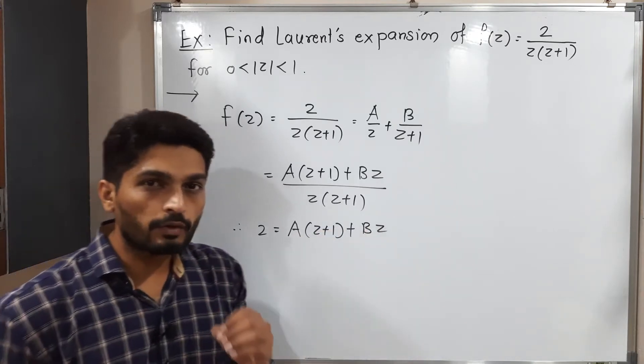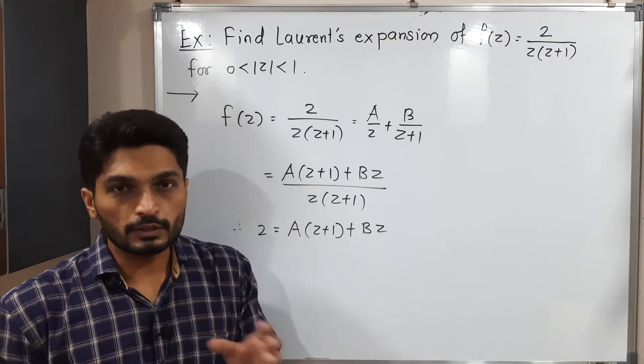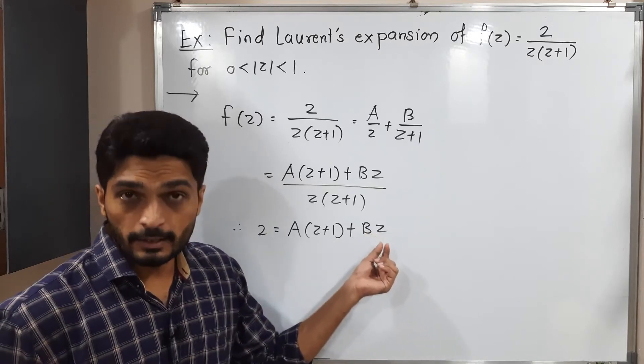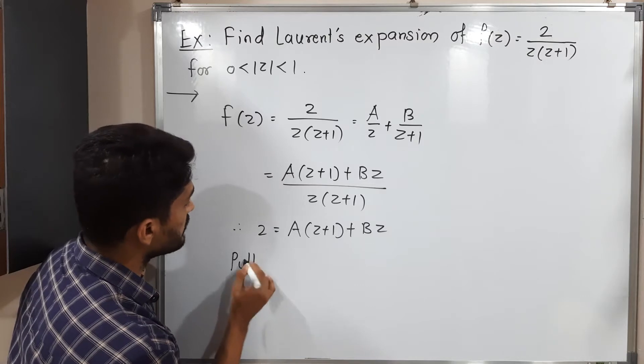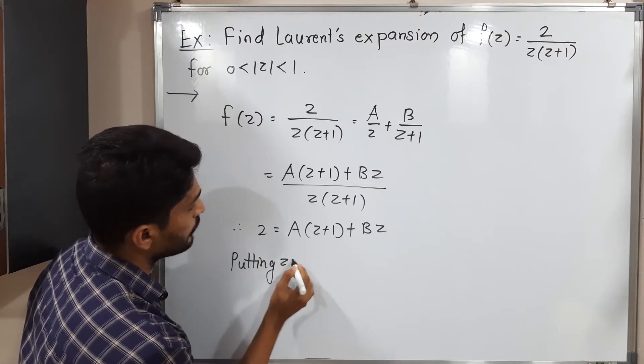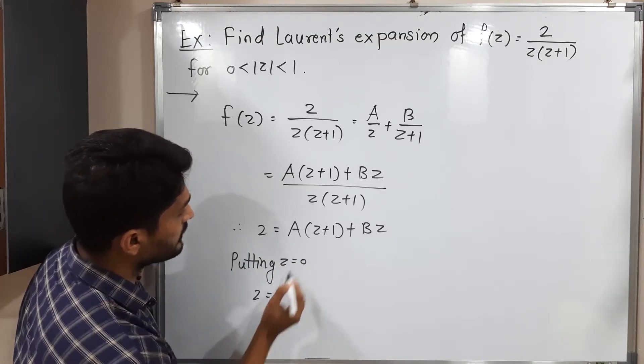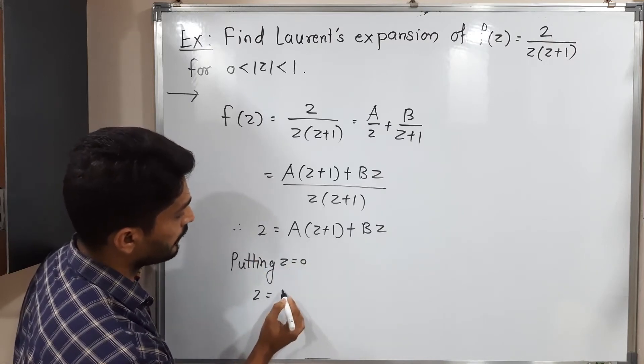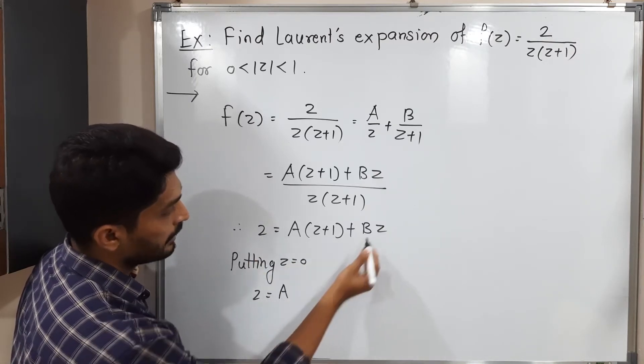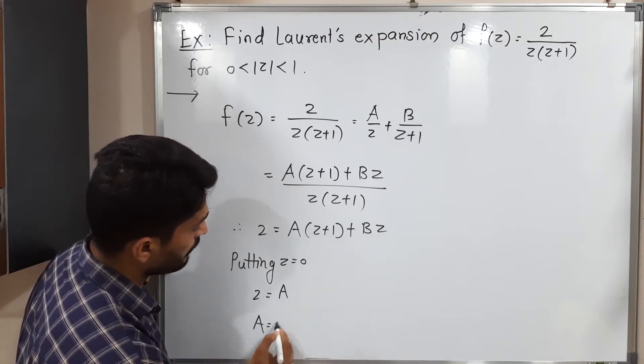To find the values of A and B, we will focus on A first. We will try to make this term zero and we will easily have the value of A. How shall we make it zero? Just by putting z equals 0. If I put z equals 0, 2 equals 1 times A. So the value of A is 2.